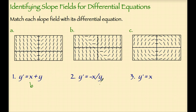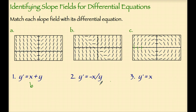Now let's look at number 2: y prime equals negative x over y. Where will this slope be 0? Where the x-coordinate is 0. Examining the two remaining slope fields — for letter A, where x is 0, we see that the slope is 0. For letter C, where x is 0, we also see that the slope is 0. Another thing we can look at is where this slope is undefined. When y is equal to 0, we should have an undefined or vertical slope. Y is equal to 0 on the x-axis. For letter A on the x-axis, we do not have vertical slopes. However, for letter C on the x-axis, we do have vertical slopes. Even though they are not drawn in, you can see from the pattern that's what they are. So for number 2, the slope field that matches our differential equation is letter C.